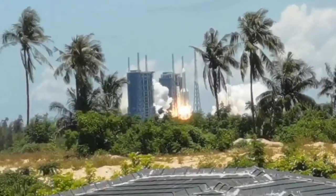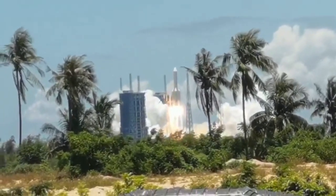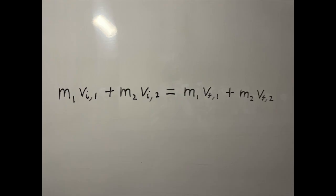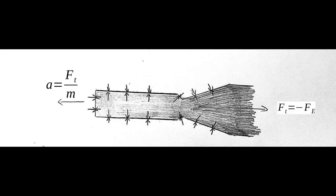We all know what rockets are and we all have an idea of how rockets work. Rockets expel exhaust away from the direction of acceleration, so as a result of the conservation of momentum and Newton's third law, the rocket accelerates.